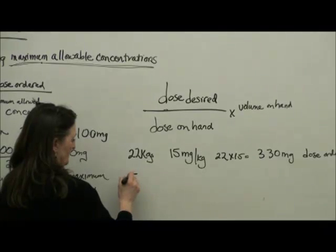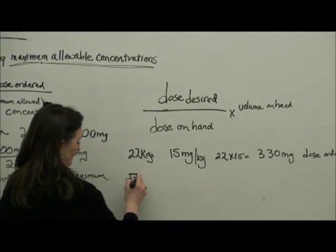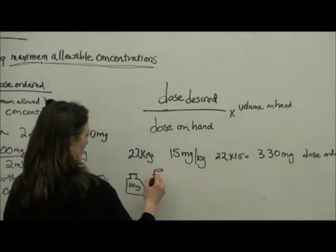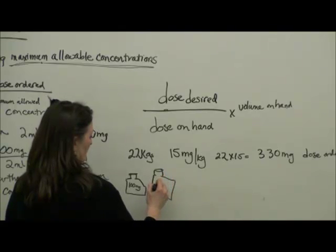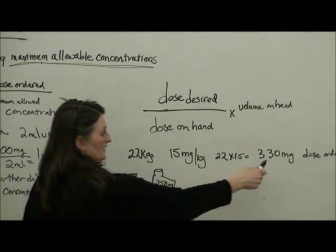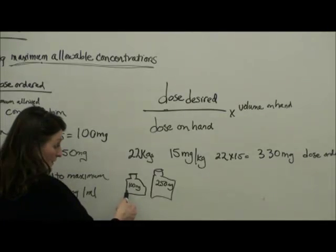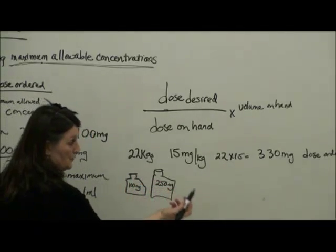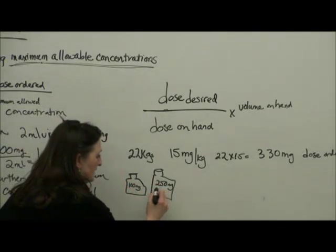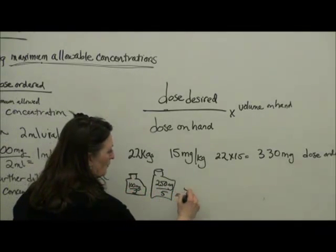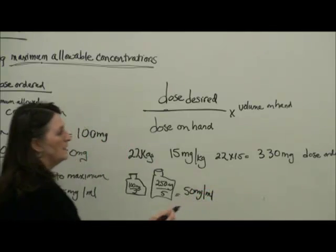So we have this little vial here of Fosphenytoin, and it's a 100 milligram vial. They also have 5 milliliter vials which have 250 milligrams, because we're going to need more than one vial. The pharmacy will probably send you two 250 milligram vials, but it doesn't matter because this is in 5 and this is in 2. The concentration is the same. These are all 50 milligrams per milliliter.